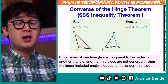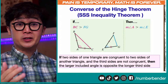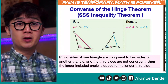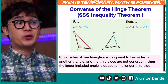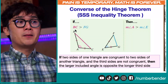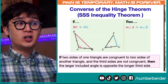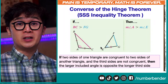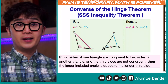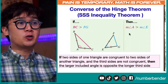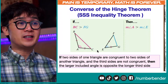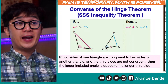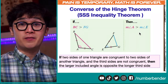We also have the converse of the Hinge Theorem. In geometry, converse is simply, in a conditional statement P then Q, its converse is Q then P. So you will notice that in our statement, side BC is larger or longer than FG. And if we're going to choose between angle A and angle E, which one is bigger, given that AB is congruent to EF and AC is congruent to EG, we know that angle A is bigger than angle E, as stated by the converse of the Hinge Theorem.